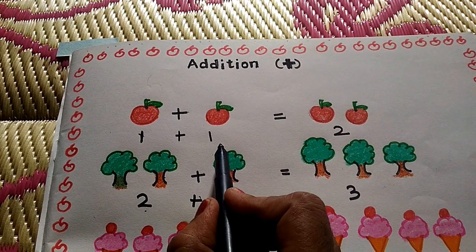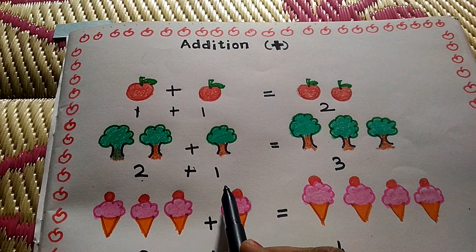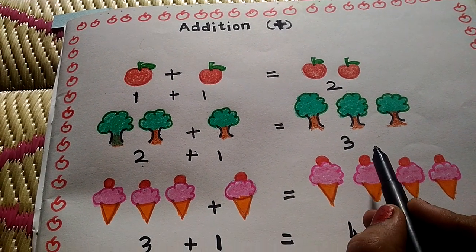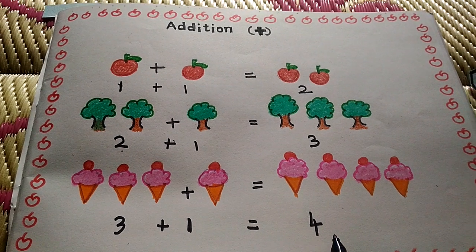Three plus one equal to four. One plus one, two. Two plus one, three. Three plus one, four.